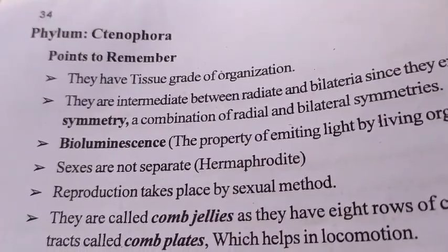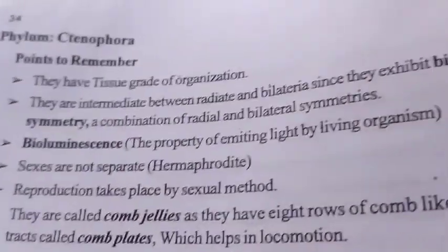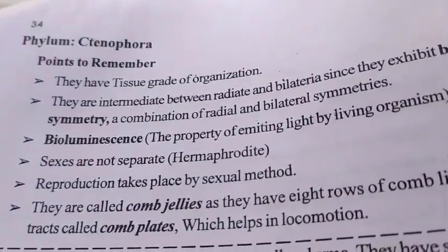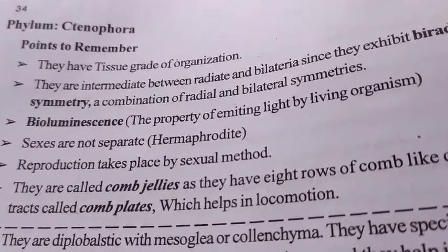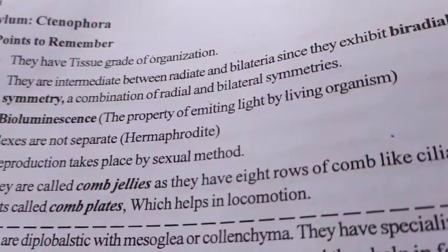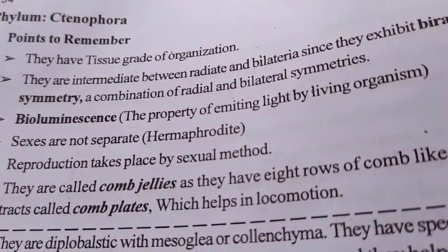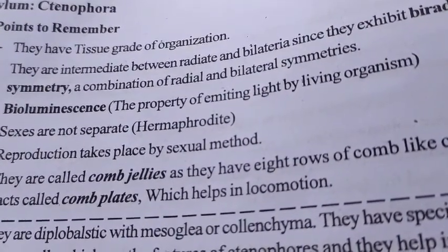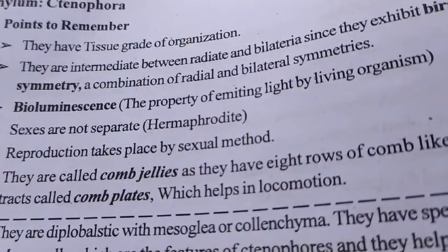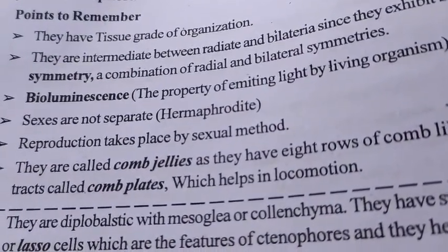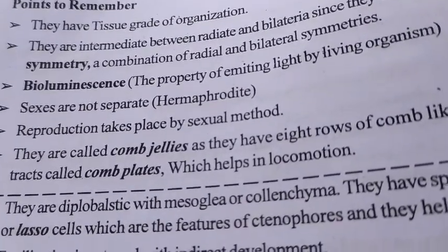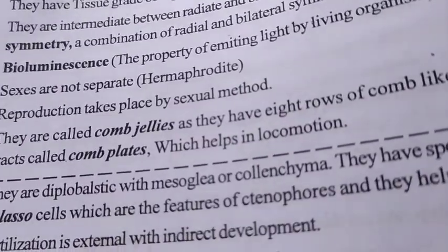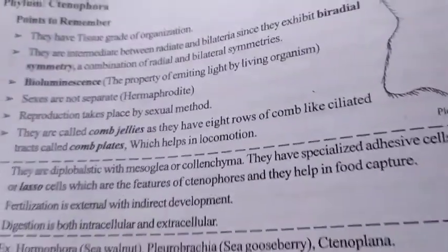The next phylum — Ctenophora. Its characteristics include: they have tissue grade of organization; they are intermediate between Radiata and Bilateria since they exhibit biradial symmetry. Bioluminescence is a property of emitting light by living organisms, and these organisms contain bioluminescence. Sexes are not separate and reproduction takes place by only sexual modes. They are called comb jellies as they have eight rows of comb-like ciliated tracts called comblets, which help in locomotion.